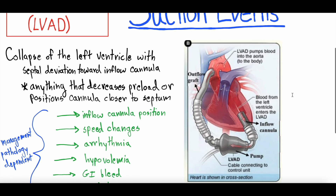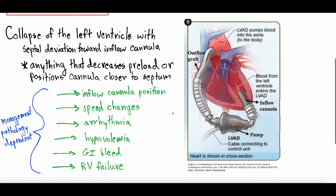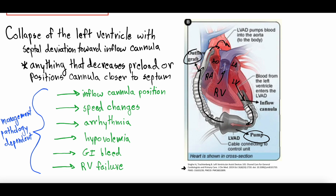So suction events with left ventricular assist devices. The idea here is that there's actual suction happening between the LVAD inflow cannula. For those who need a brush up: an LVAD is a surgically implanted left ventricular assist device. You have the right ventricle, right atrium, the right ventricular outflow track into the pulmonary vasculature, the left atrium, left ventricle, and the aortic outflow track into the aortic arch. What an LVAD does is the inflow cannula sucks blood out of the left ventricle, it goes through the inflow cannula into the pump, and that pump shoots the blood through the outflow cannula into the aorta to be circulated around the body.